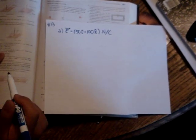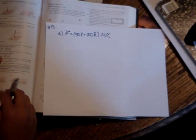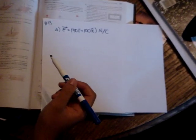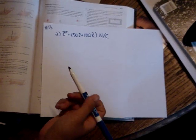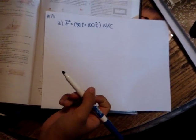OK, number 13 says: a 2 centimeter by 3 centimeter rectangle lies in the xz plane. What is the electric flux through the rectangle if the electric field vector is 50i hat plus 100k hat newtons per coulomb?